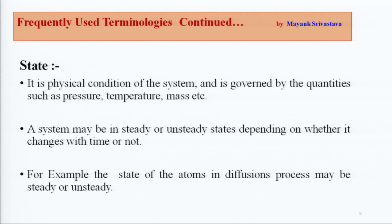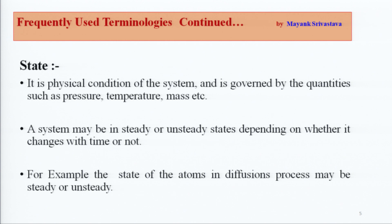Now, the state. State is a physical condition of the system and governed by quantities such as pressure, temperature, and mass. Physical condition means the present condition of the material — which is its physical quality. Like gas form — then it is gaseous state. Liquid form — then it is liquid state. So that is a fixed state. State is a physical condition of a system and governed by quantities. If there are 10 or 20 materials, they have a physical state. Number of atoms — if we define the number of atoms, they are physical state.